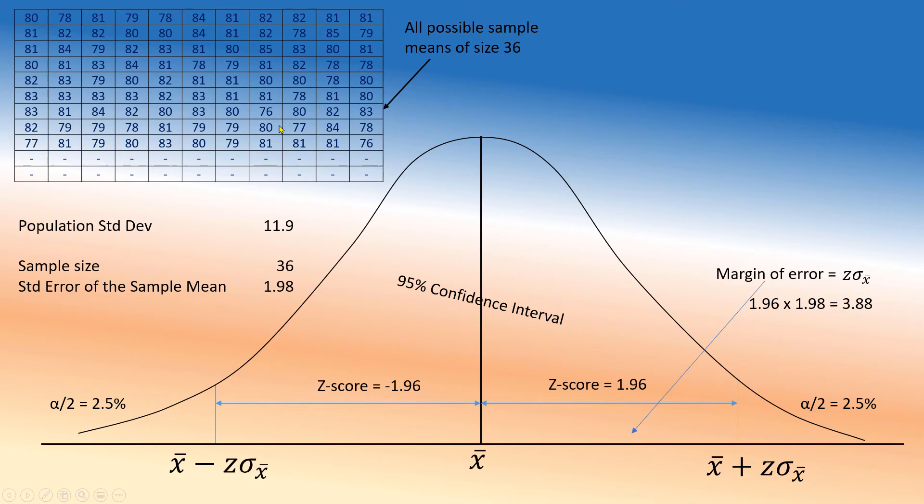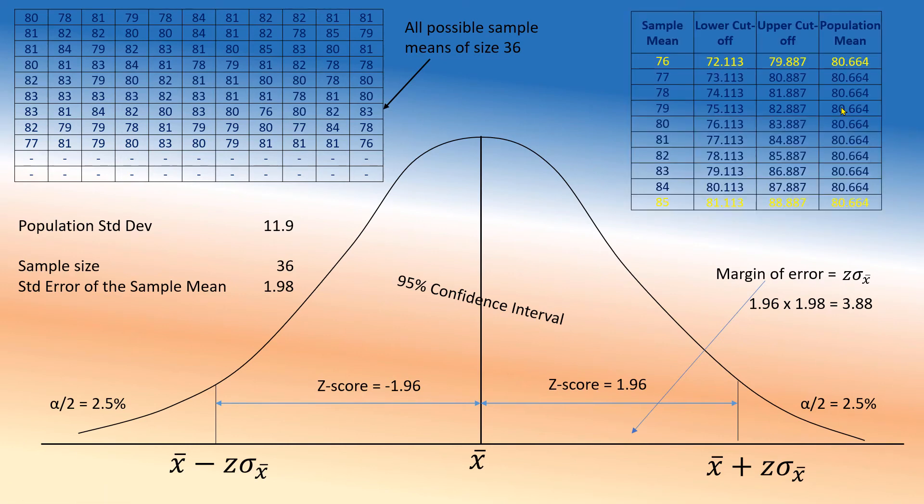So when you say I took a sample of 36, you're actually picking up a number from this table now. Because every possible sample you can think of, the mean is already here. So we can think that we're picking up a number from here, which means we're taking a sample of size 36. Let's suppose you took the sample and the sample mean happens to be 76, which exists here.